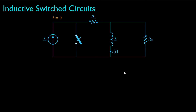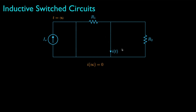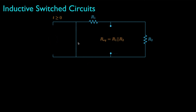Next, we look at the circuit at the time the switch is closed. We replace the inductor with a current source that provides its current at t equals zero, and because i of t is the current through the inductor, its initial value will also be i sub s. Then in steady state with the switch closed and the inductor replaced by a short, all of the current will flow through the closed switch, and the final value for the current through the inductor will be zero. Finally, we turn off the independent source and determine the equivalent resistance as seen by the inductor, which in this case is R1 in parallel with R2.